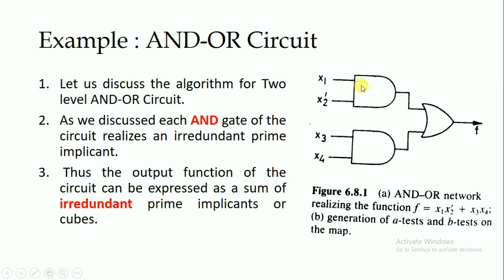Here this is the AND gate and this is the OR gate. For the AND gate, we are giving the inputs x1 and x2 dash. For the other AND gate, we are giving x3 and x4. So the function f is represented as x1·x2' + x3·x4. For this boolean function, we have to find out the A test and B test.